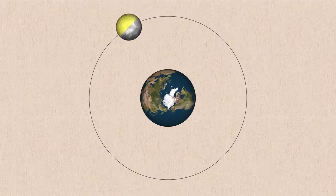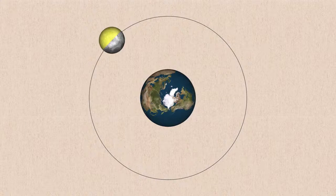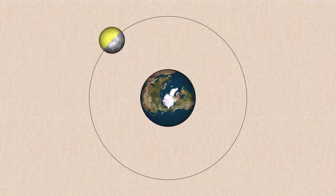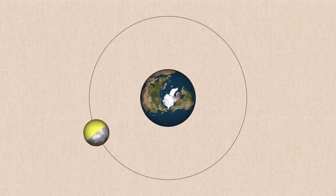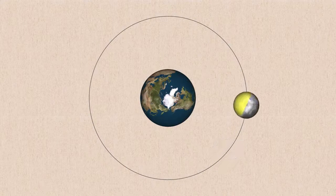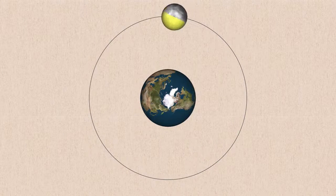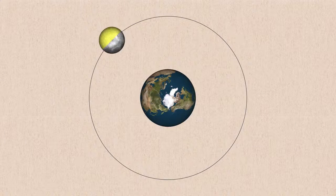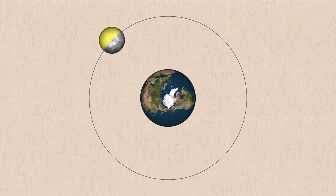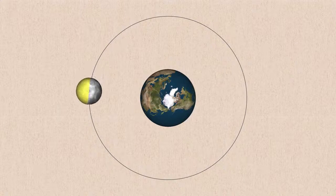So if the moon doesn't rotate on its axis, then over the course of about a month or so, we should expect to see all sides of the moon, both the near side and the far side. On the other hand, if the moon executed several rotations on its axis as it revolved around the earth once, then we would also be able to see both the near and far sides of the moon. So how is it that we could only just see the near side of the moon, no matter where it is in its revolution around the earth? And the answer is timing. The rotation period is exactly equal to its orbital period.